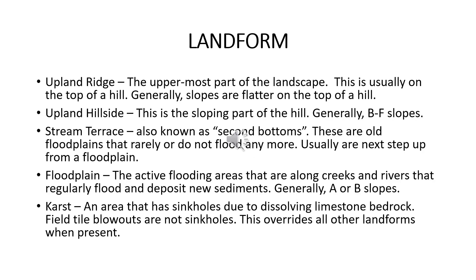Landform is the physical feature of the earth's surface formed by natural causes. In Kentucky land judging, we will identify one of five different landforms: floodplains, terrace, upland hillside, upland ridge, and karst. Starting with upland ridge — this is the uppermost part of the landform, the top of the hill or the highest point. Generally, the slopes are A or B slopes, but we could also see some C slopes in some parts of Kentucky.